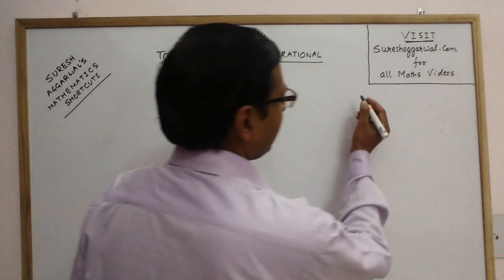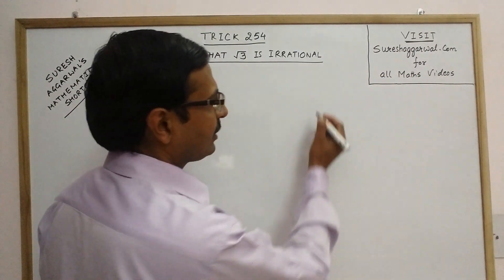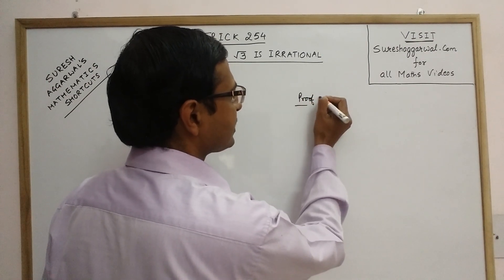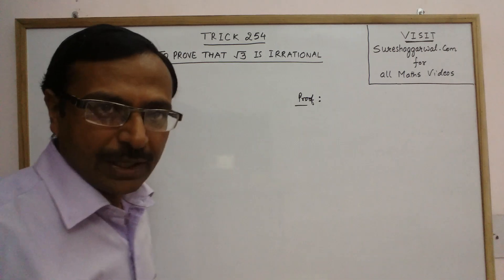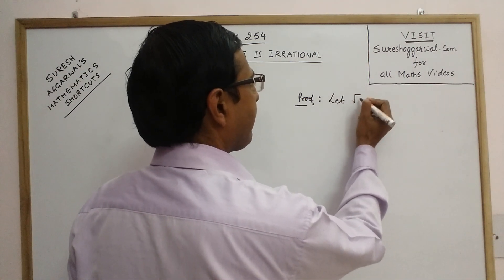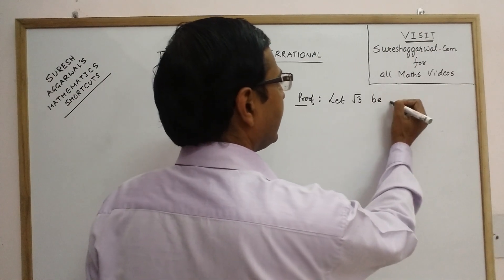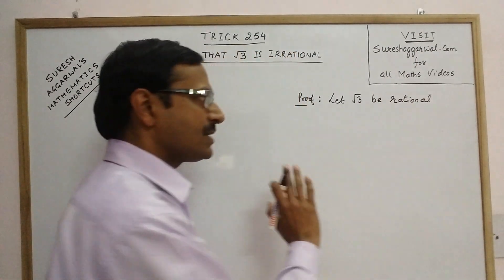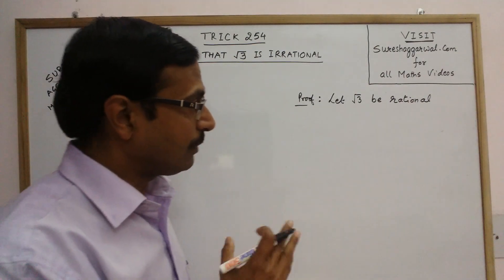Now for this we make use of the contradiction method and the proof starts by assuming that root 3 is rational. So if we assume any number as rational, let root 3 be rational,